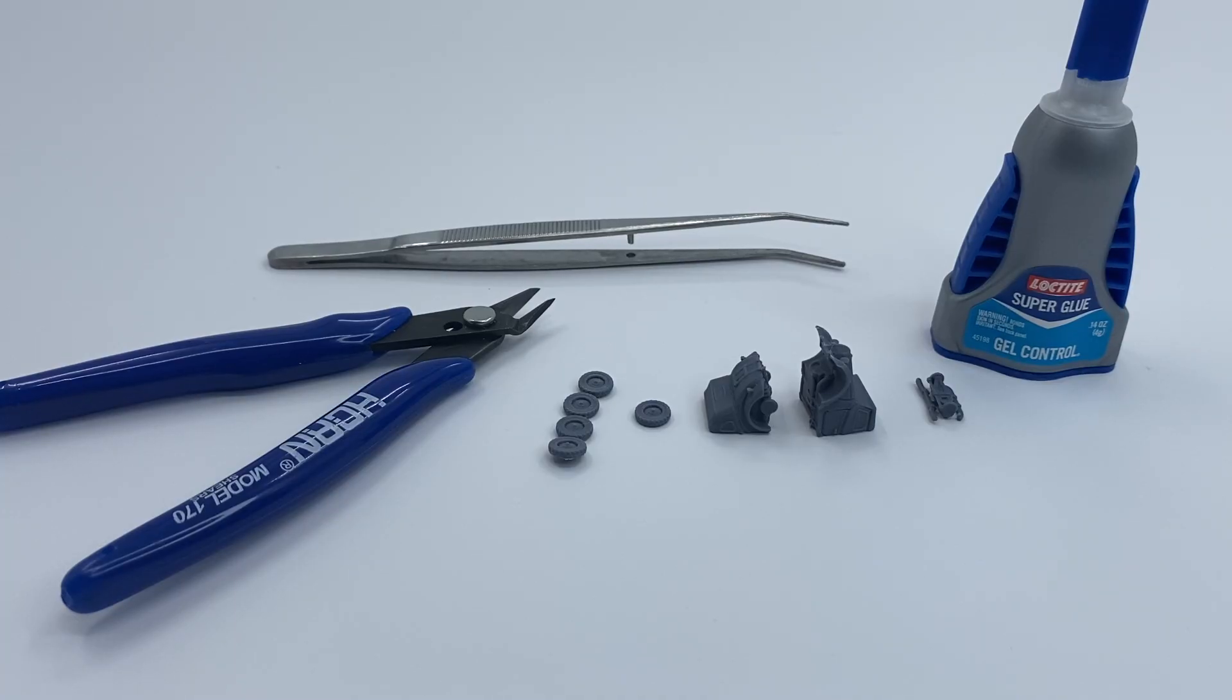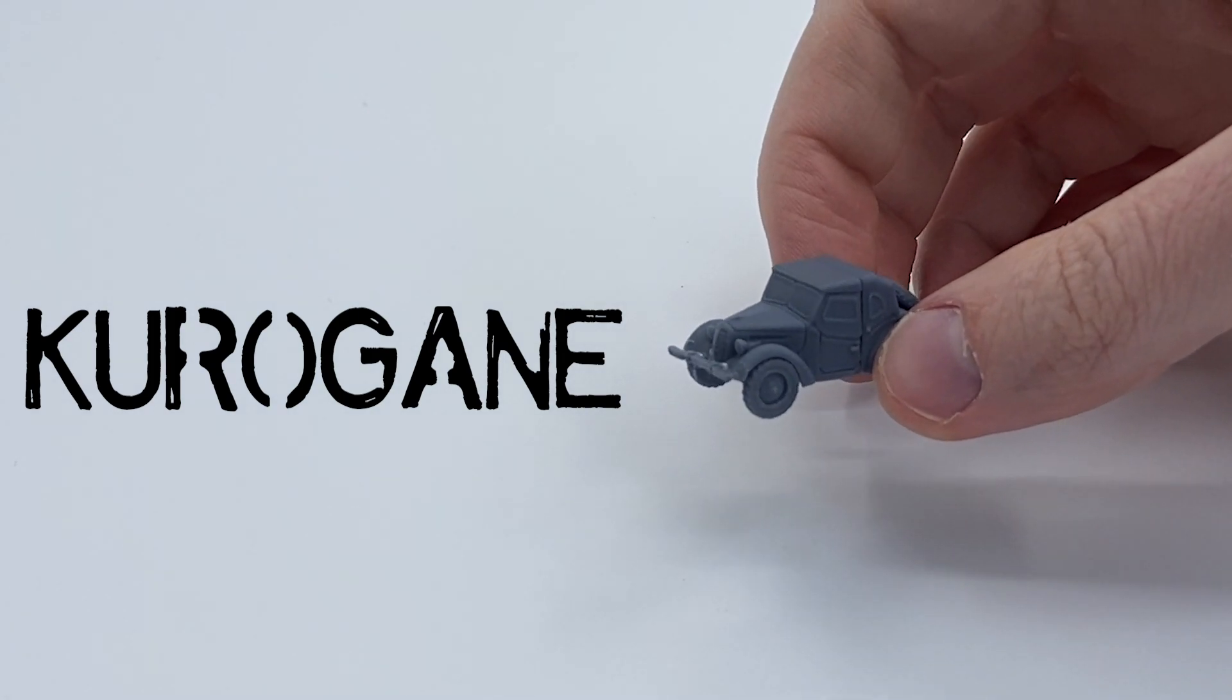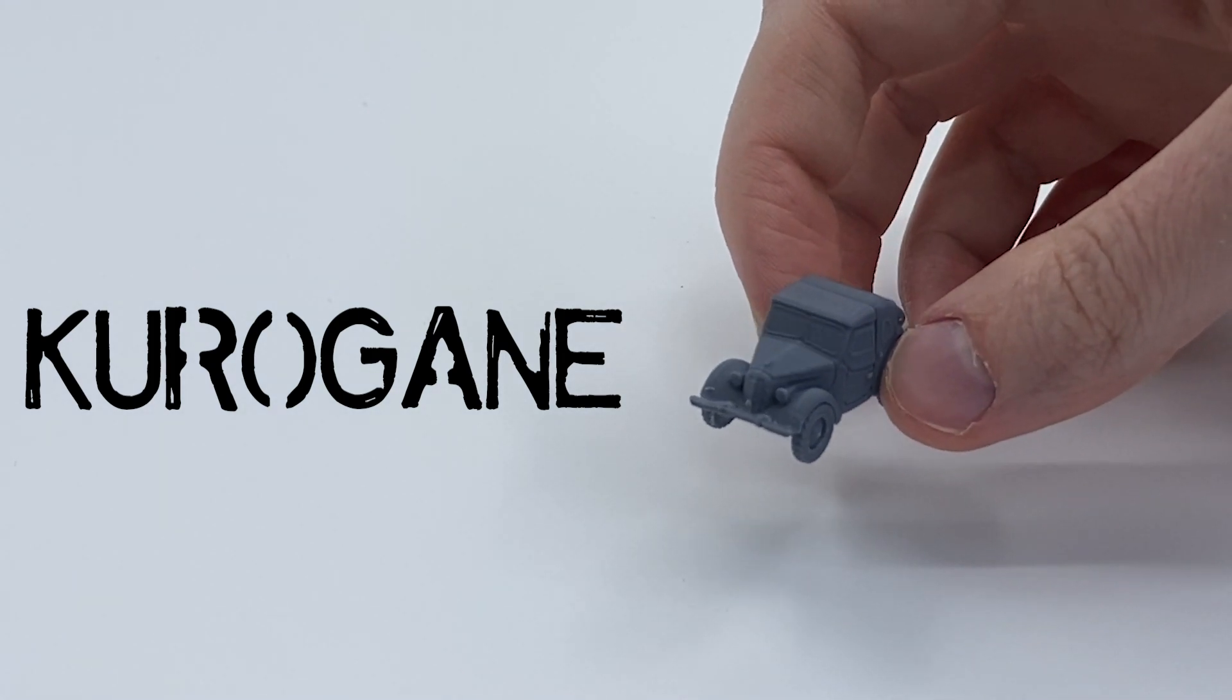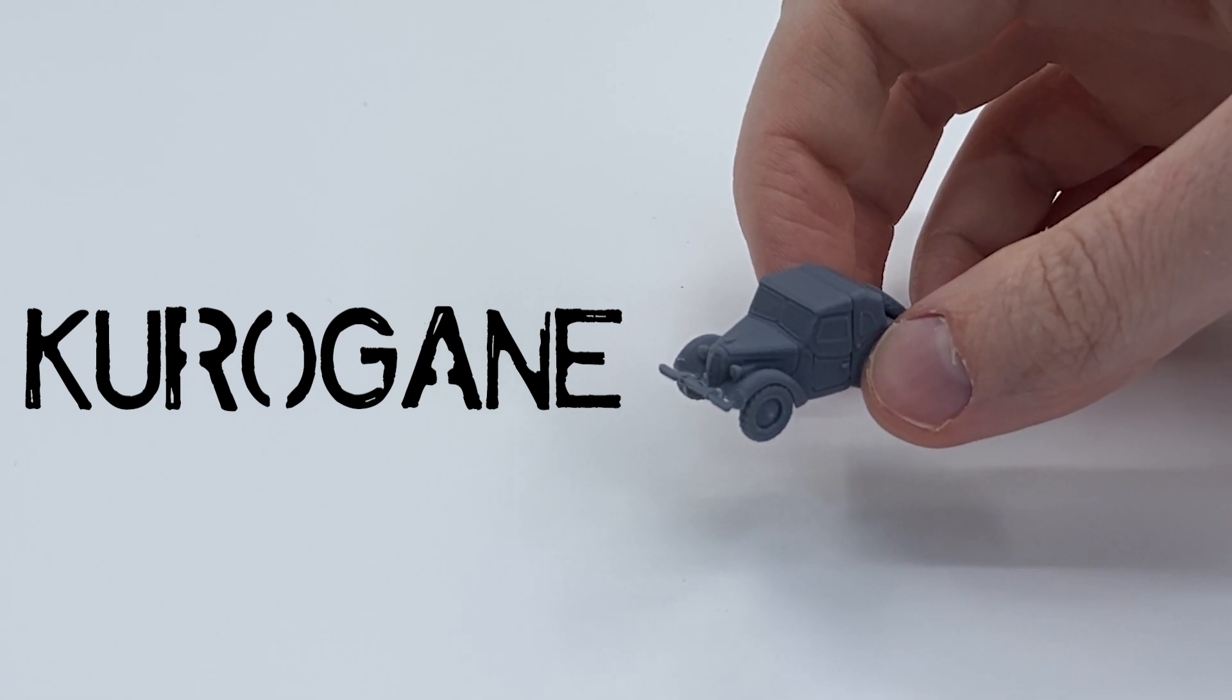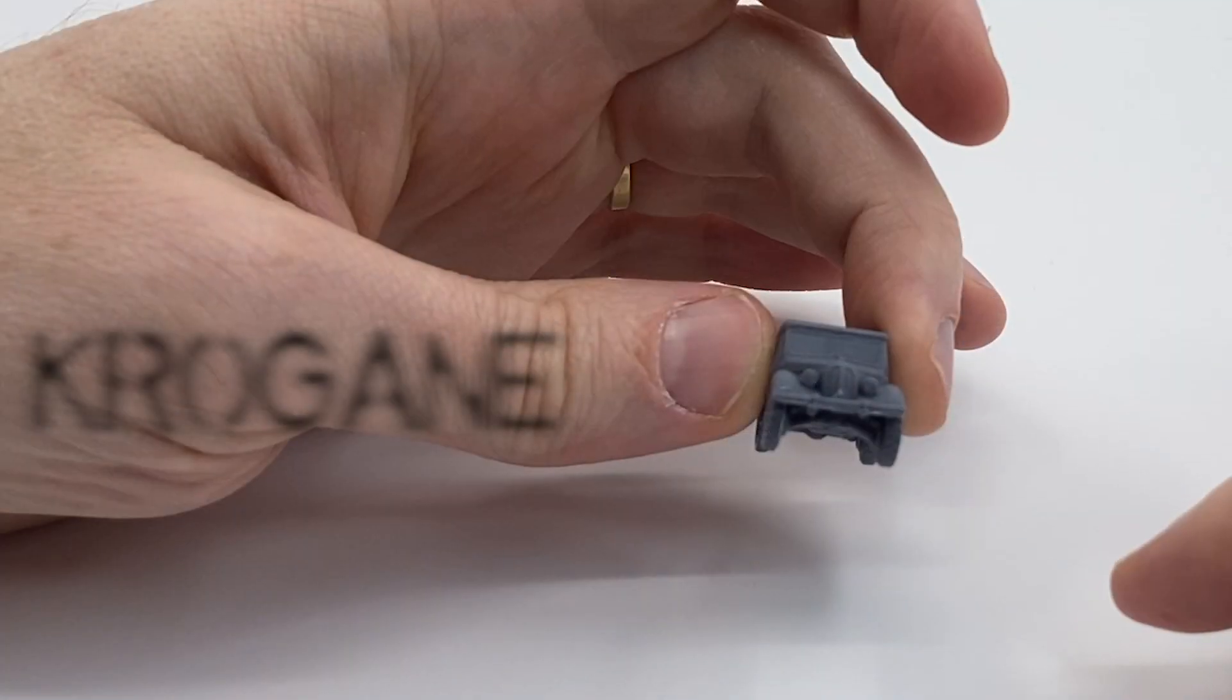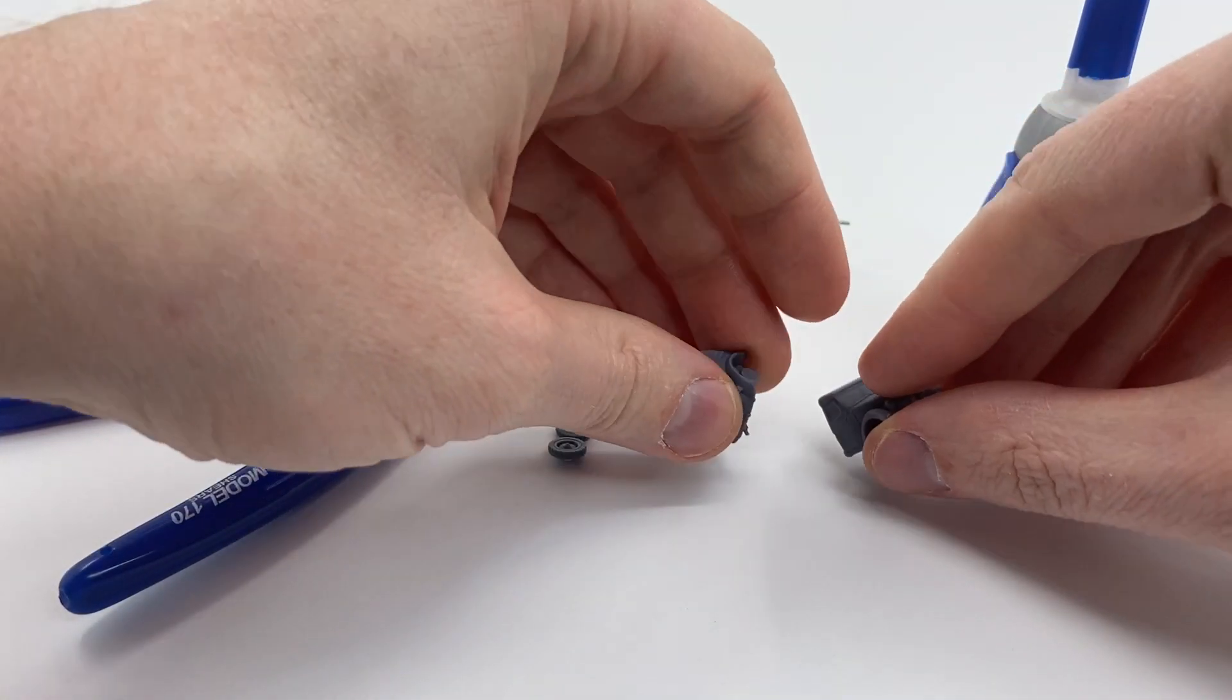Hello and welcome to another video from Miniature Tanks Company. In this video we will be assembling the Japanese little car. It's called in English, I pronounce it as Krogane, I guess. But I looked it up and I think in Japanese it's Kurogane. Correct me if I'm wrong, but we're going to be assembling this little car.